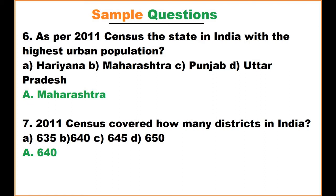The 2011 census covered how many districts in India? The options are 634, 635, 640, 645, and 650. The answer is 640 — 640 districts are covered in the 2011 census.